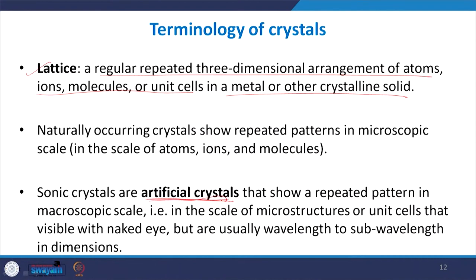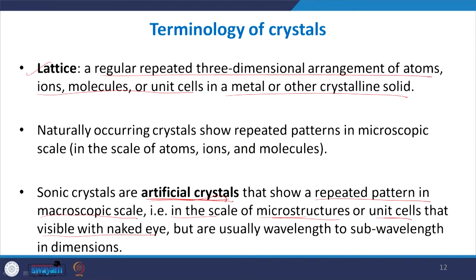Naturally occurring crystals have repetition on a microscopic scale, but for artificial crystals the individual unit cells are larger structures — sometimes visible with the naked eye — arranged periodically in one, two, or three dimensions. An acoustic metamaterial can be thought of as an artificial crystal: we have some individual building block which is a unit cell, arranged in a periodic fashion, forming a sort of crystal lattice. A sonic crystal is an artificial crystal.